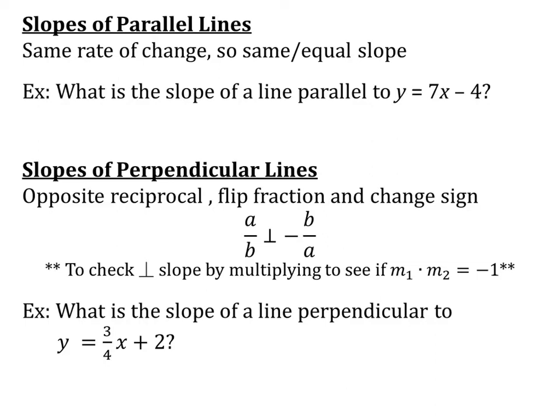Let's try this example. What is the slope of a line parallel to y equals 7x minus 4? Well, parallel lines have the same slope. So if our original line has a slope of 7, then our new line is also going to have a slope of 7.